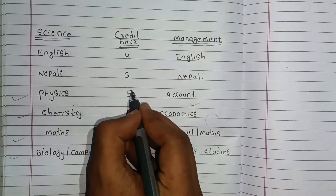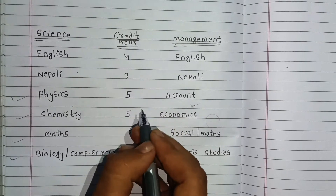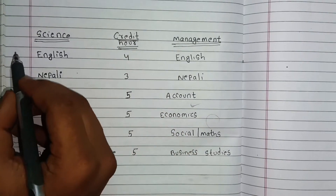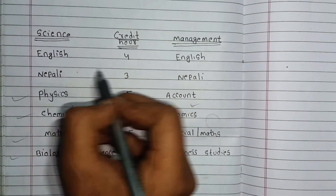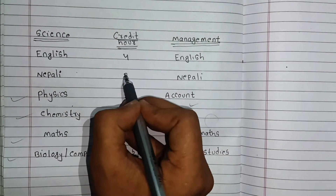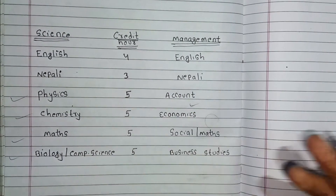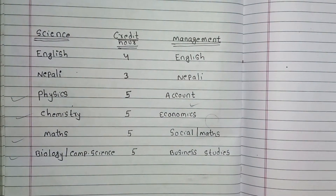If you have 5 marks and 5 credits, then in Nepal, you need to go to the credit system. You may need 5 credits or 3 credits depending on your situation.